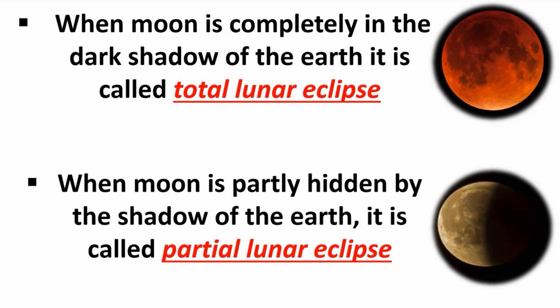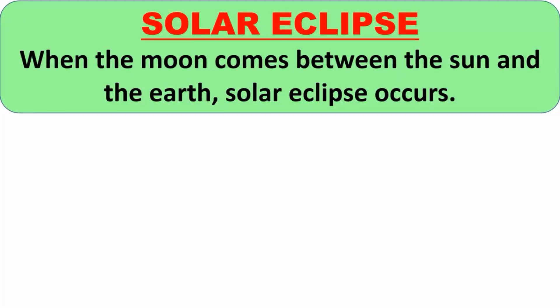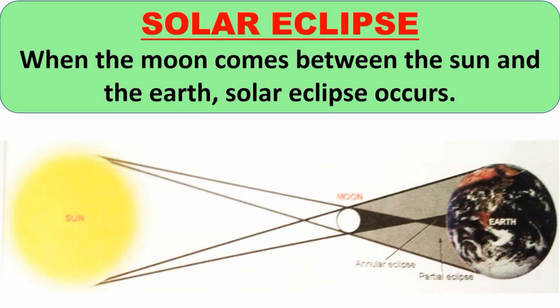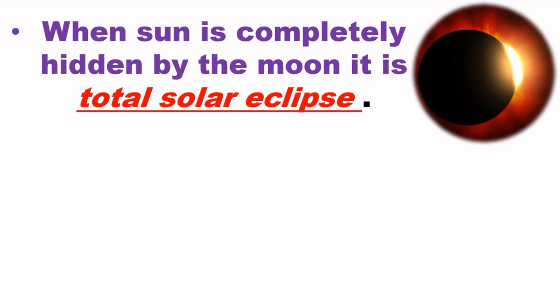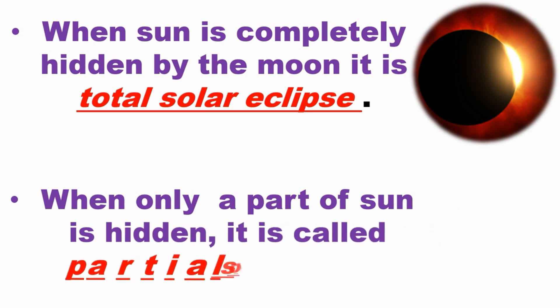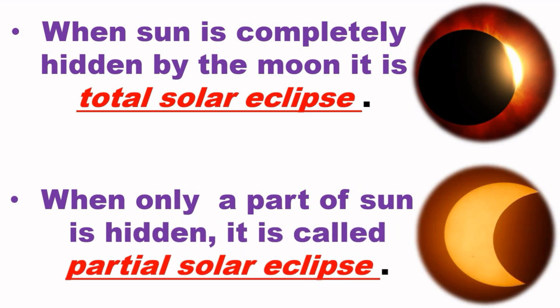Next we will see how solar eclipse occurs. The moon is much nearer to the earth than the sun, so when the moon revolves around the earth it sometimes comes between the sun and earth, and the rays of the sun cannot reach the earth. In short, the shadow of the moon is cast on the earth, and in this way solar eclipse occurs. We can notice two types of solar eclipse: total solar eclipse and partial solar eclipse. When the sun is completely hidden by the moon it is called total solar eclipse, and when only part of the sun is hidden it is called partial solar eclipse.